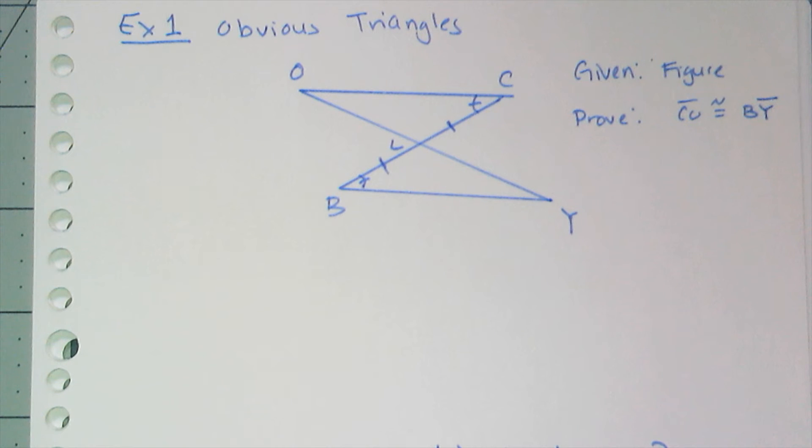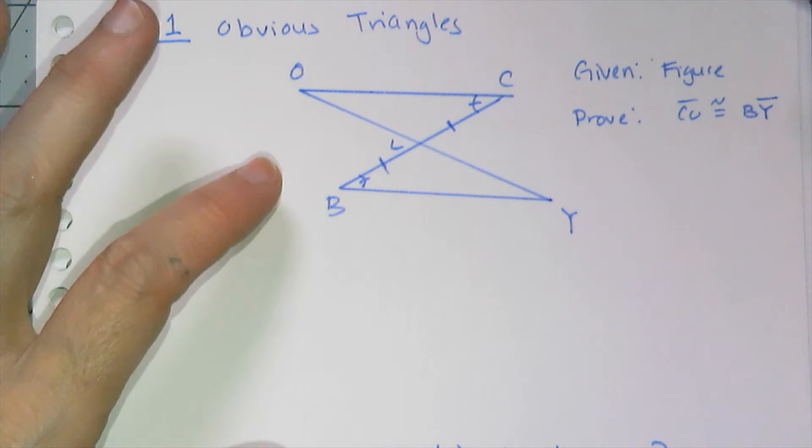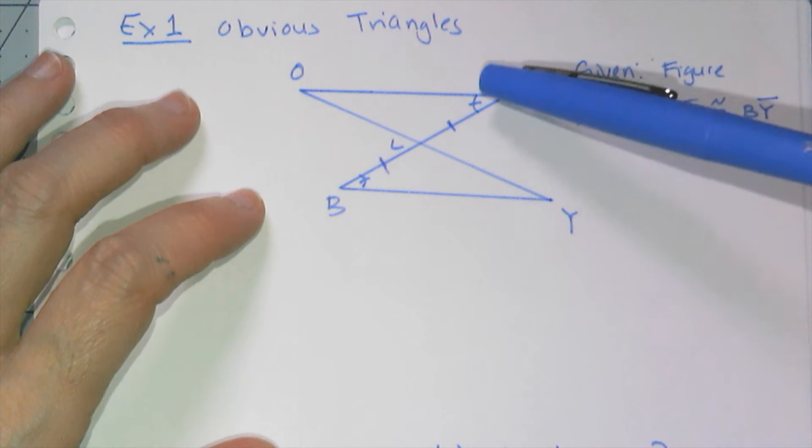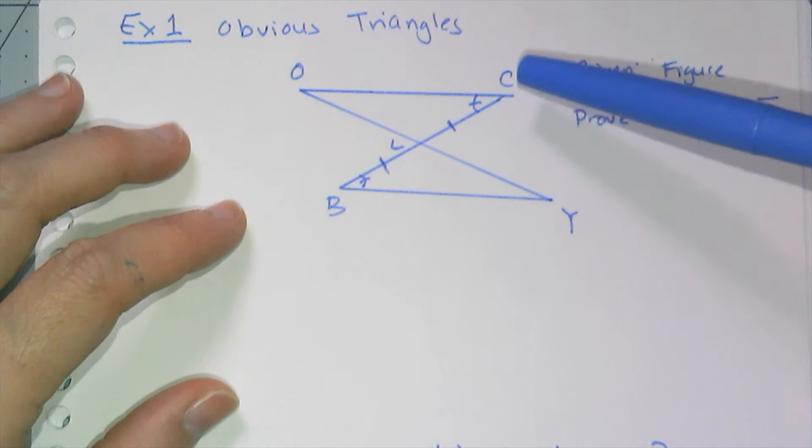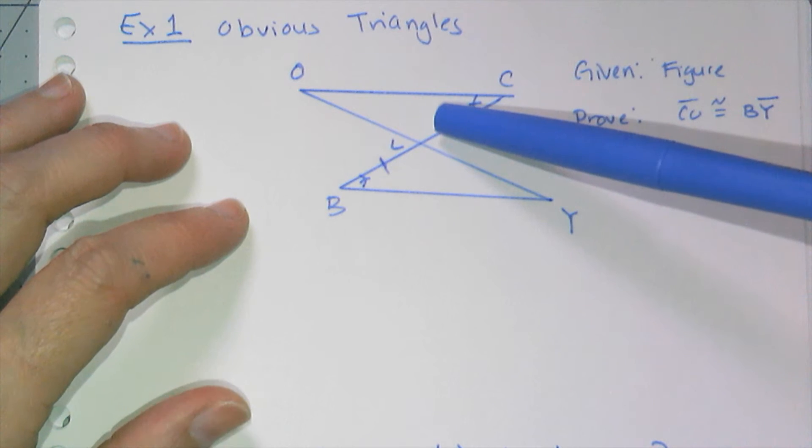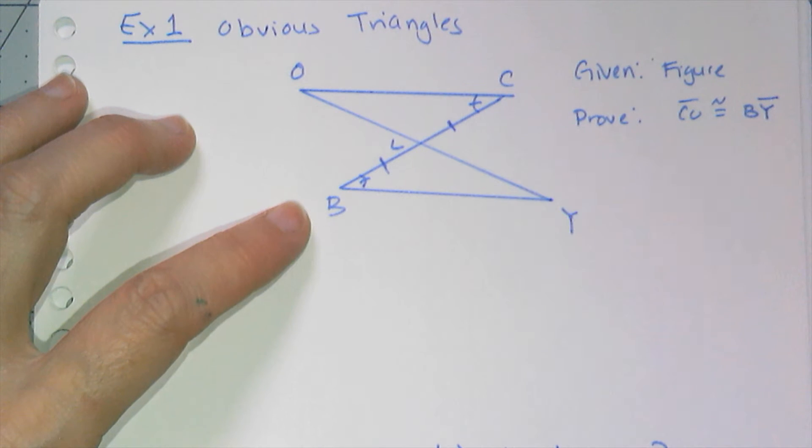So in this first example, it's kind of obvious which two triangles you're trying to show are congruent because there are only two triangles given to you. So I'm given all the information in the figure. I want to prove that this side CO is congruent to BY, which means I have to get triangle COL to be congruent to triangle BYL.